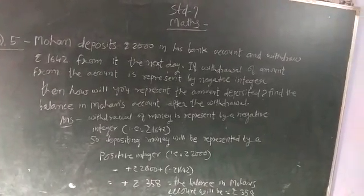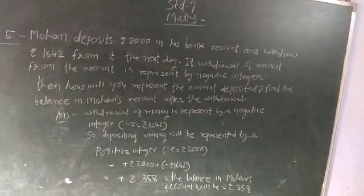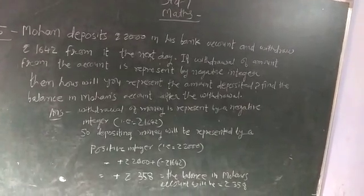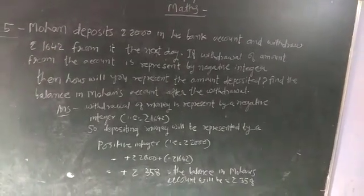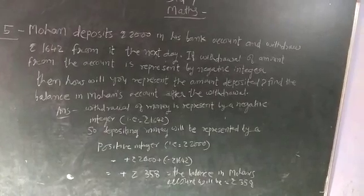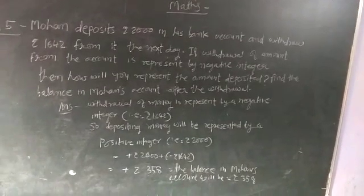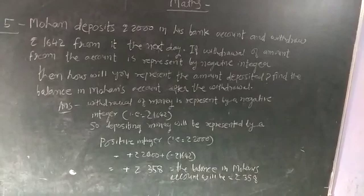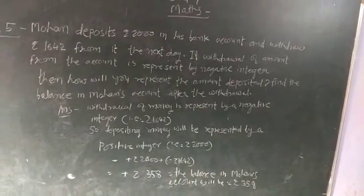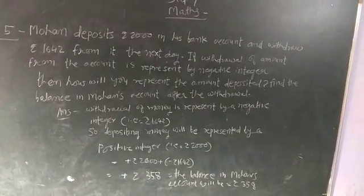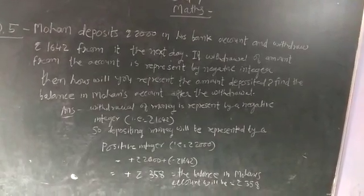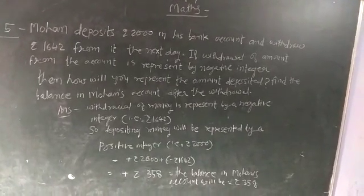Mohan deposits Rs. 2,000 in his bank account and withdraws Rs. 1,642 from it the next day. If withdrawal of amount from the account is represented by negative integer, then how will you represent the amount deposited?